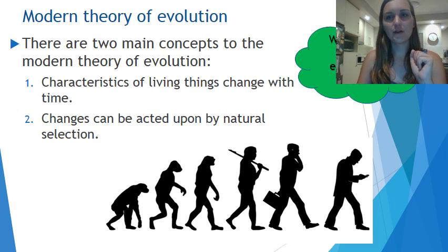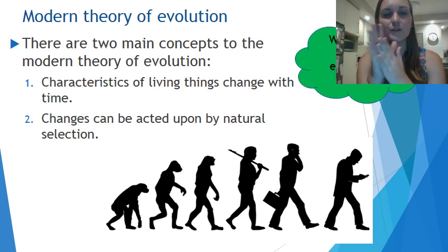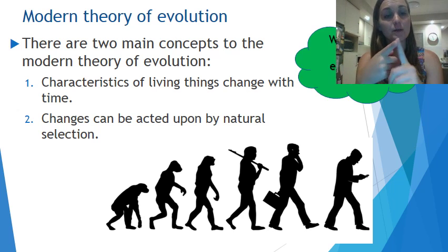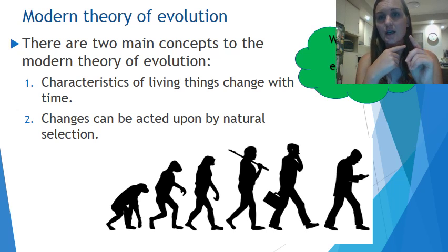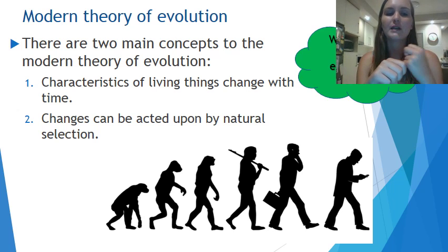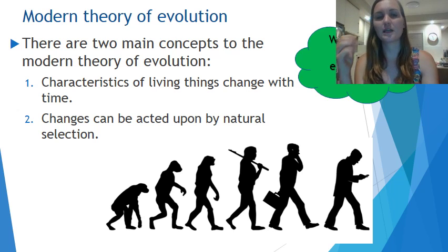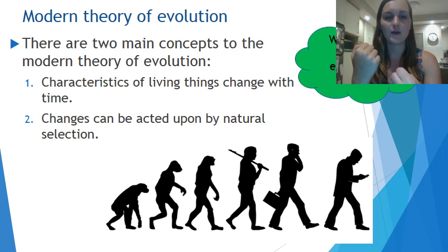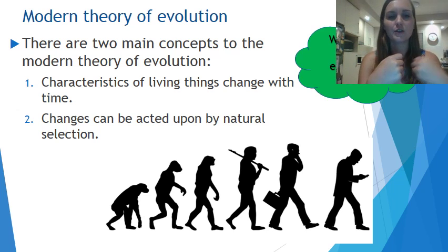The modern theory of evolution has two main concepts at its core. The first is that characteristics of living things change with time. The second is that these changes can be acted upon by natural selection. Natural selection and evolution go hand in hand — it's a very important process that drives evolution.